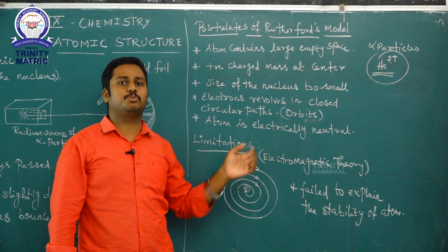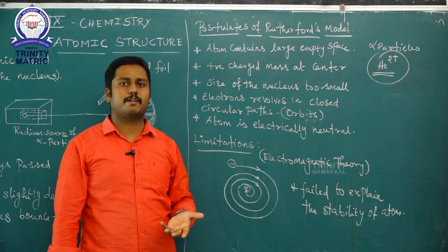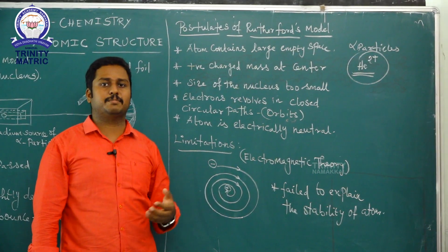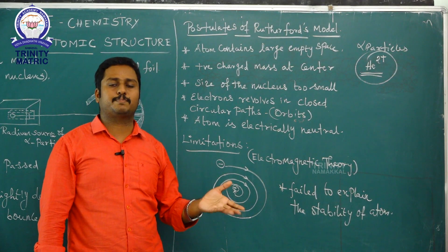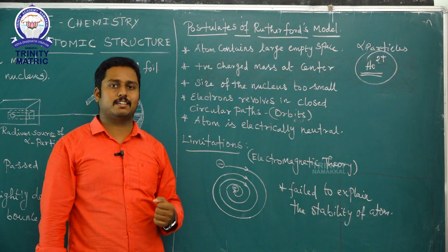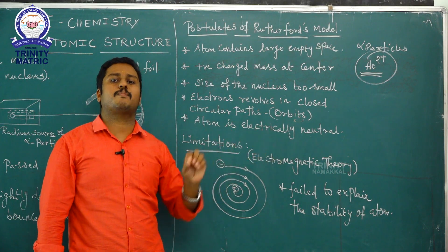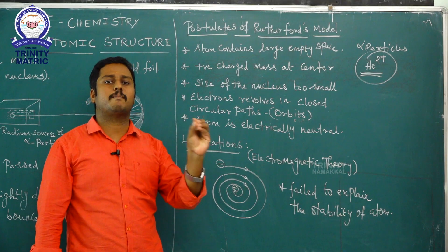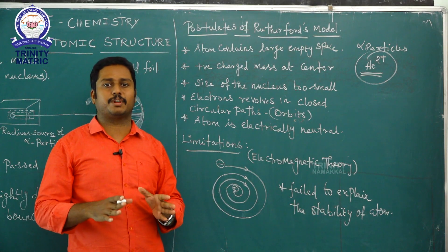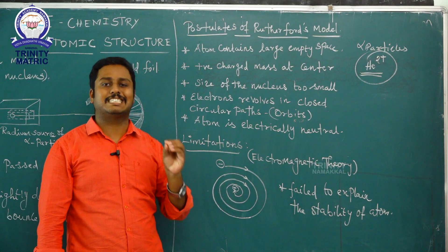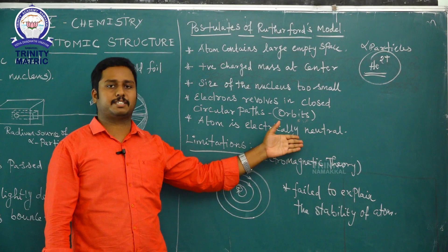The atom is electrically neutral — neutral means no net positive or negative charge. The atom contains subatomic particles: protons (positive charge), electrons (negative charge), and neutrons. The atom is neutral because it contains an equal number of protons and electrons. The equal positive and negative charges cancel out, making the atom electrically neutral.